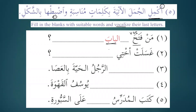Ghassalat ukhti — my sister washed — al-qamisha / al-thawba — whatever you choose. For example, al-qamisha — my sister washed the shirt. Here we have al-rajlu al-hiyyata bil-asha — qatala al-rajlu al-hiyyata bil-asha — the man killed the snake with the stick.